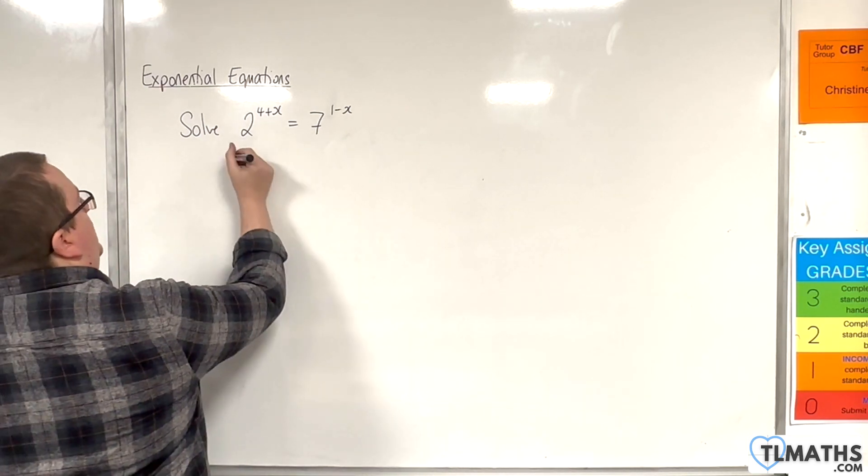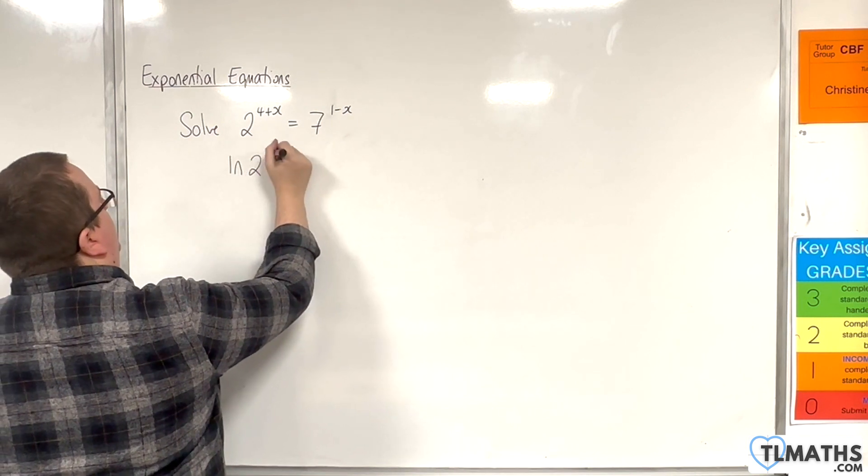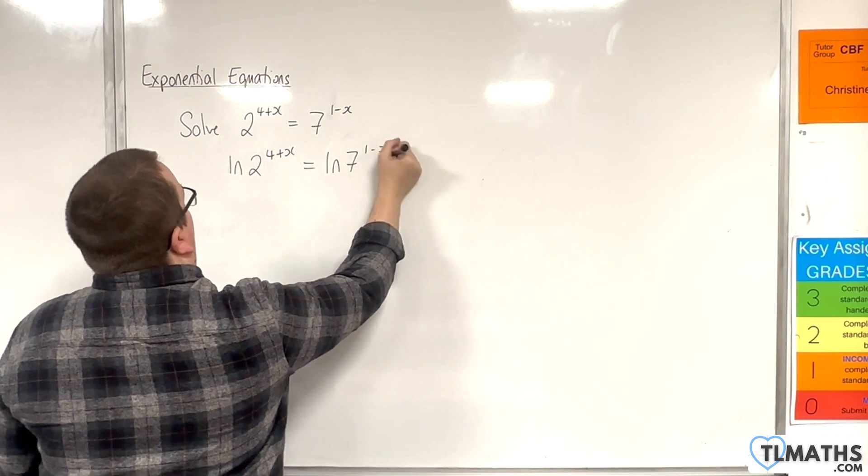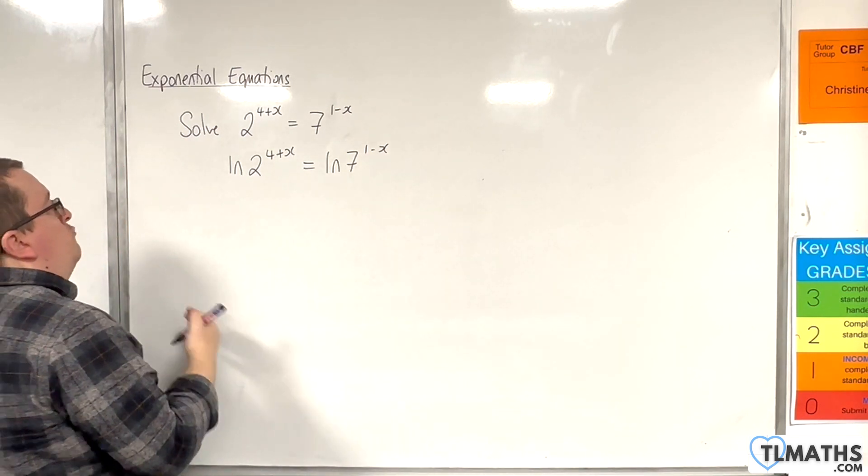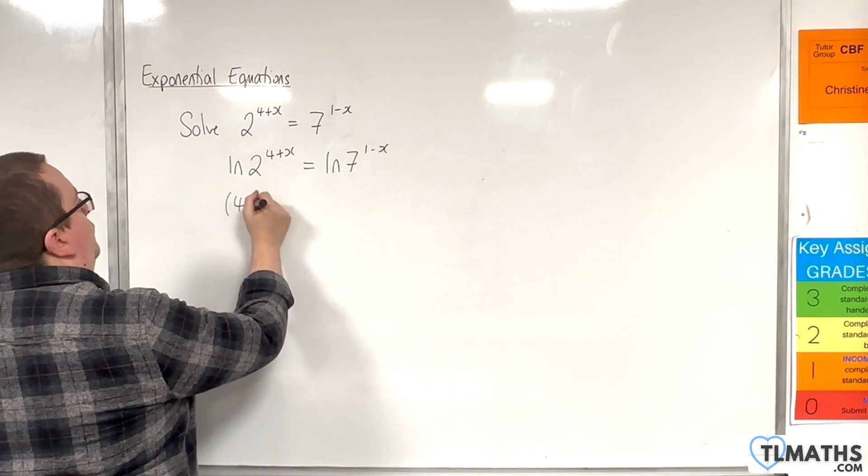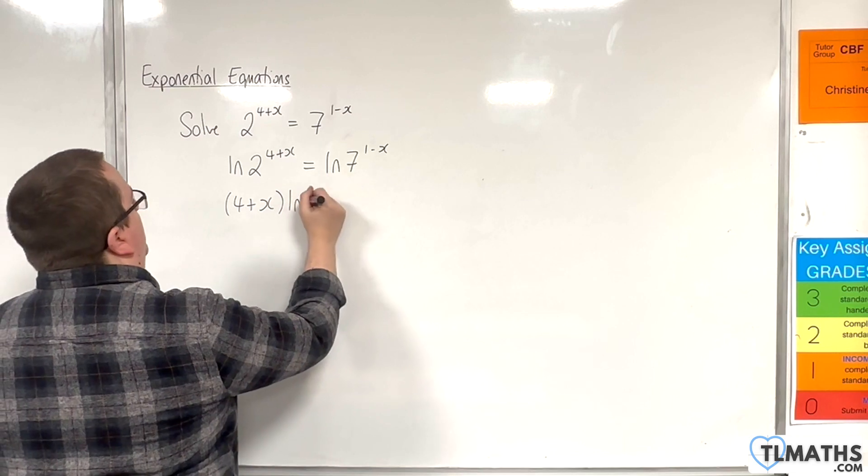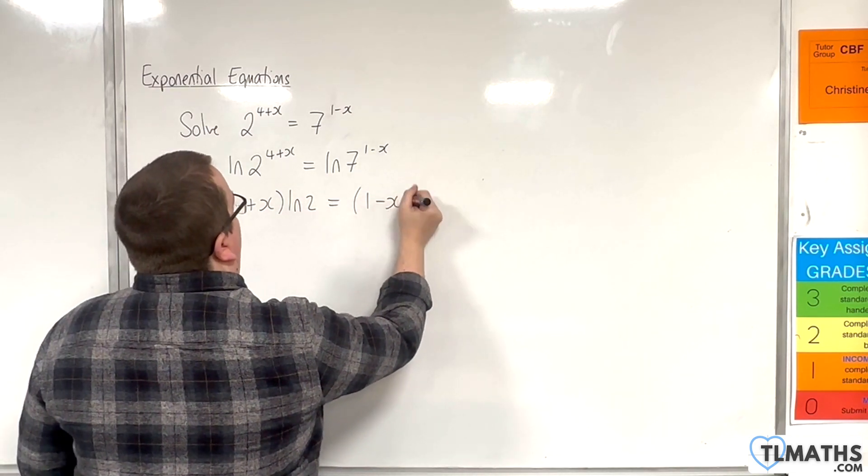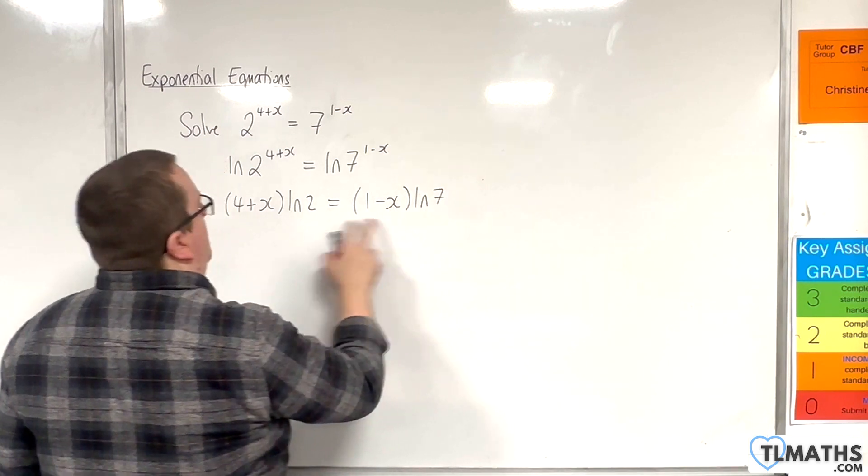So I'm going to take the natural log of both sides, then use the power rule to bring the powers down to the front, so (4+x) times natural log of 2, make sure you're in a bracket there, and (1-x) log 7, remember the bracket.